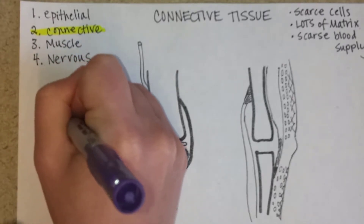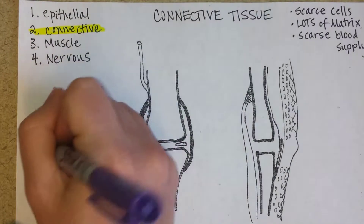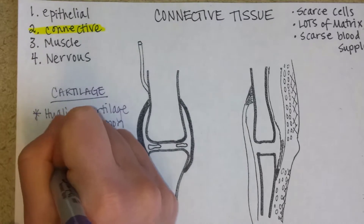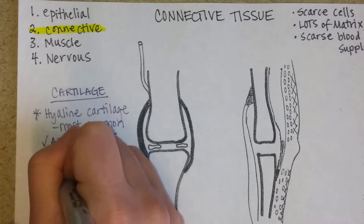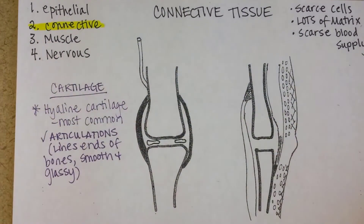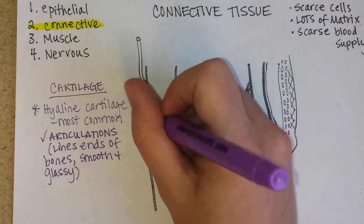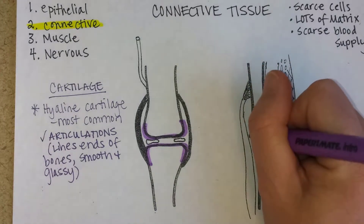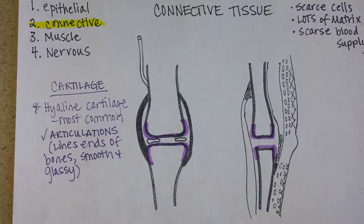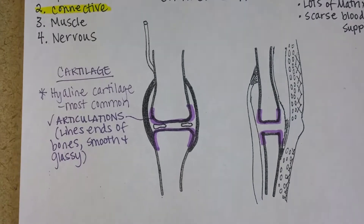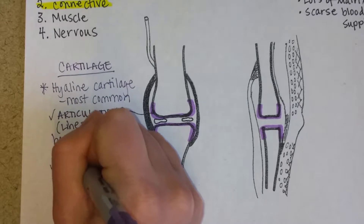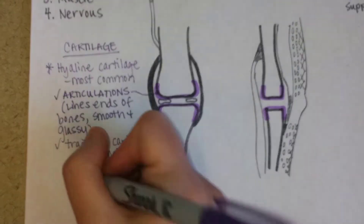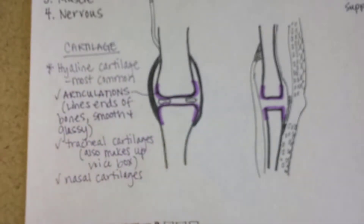There are three kinds. Hyaline cartilage is the most common in your body. It's found, for example, at articulations — this is articular cartilage that lines the ends of bones, and it should be smooth and glassy to reduce friction when you bend your knee. The ends of the bones are always lined with articular cartilage. Some other places that you have hyaline cartilage are your trachea, your larynx — your voice box — your nose, and the nasal cartilages that give us the unique shape of our nose.